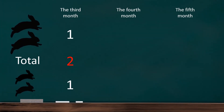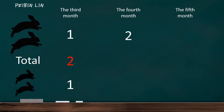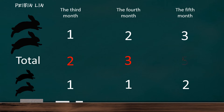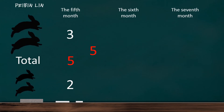By the fourth month, all pairs of rabbits from the last month were adults. At the same time, a pair of adult rabbits from the last month gave birth to a pair of newborn rabbits. Now the total pairs of rabbits become five. By the sixth month, all five pairs of rabbits in the previous month were adults. At the same time, three pairs of adult rabbits from the previous month gave birth to three pairs of newborn rabbits. Now the total pairs of rabbits are equal to eight.